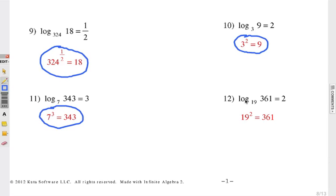And finally, 19 to the second power is 361. 19 is the base, 2 is the exponent, and the value or answer is 361.